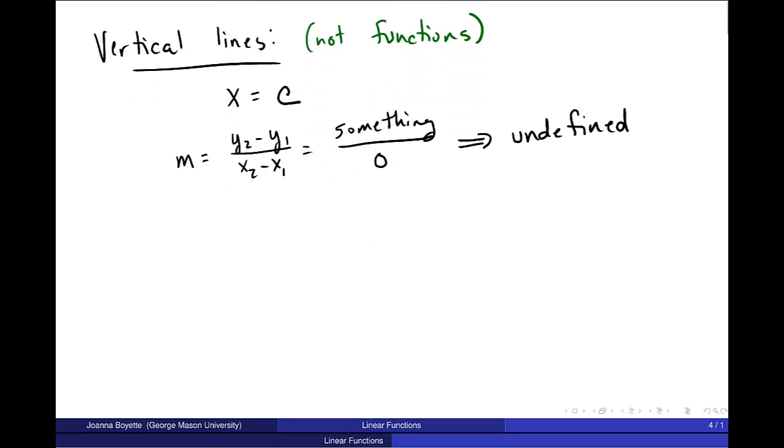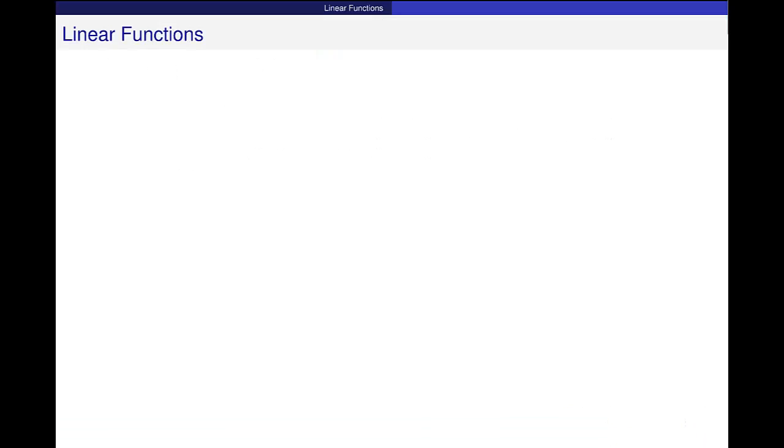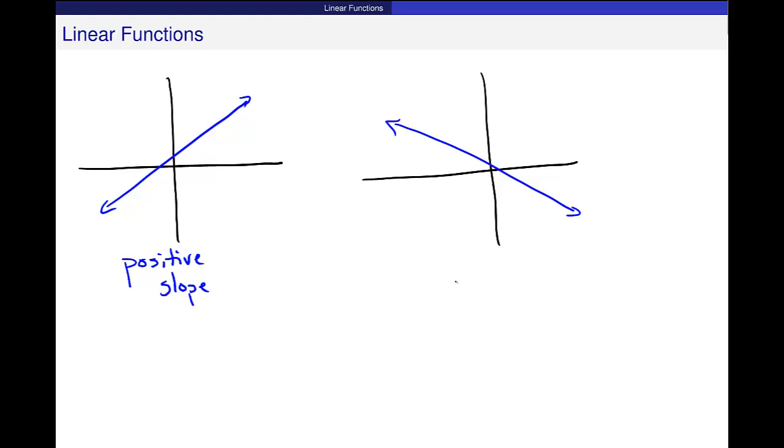I want to make sure that we have a pretty intuitive understanding. If I have a graph that looks like this, positive slope is moving up and to the right. It could be less slanted, but that's kind of positive slope. And negative slope is moving down and to the right. Let me just make this note on here. This is positive slope. And this is negative slope.